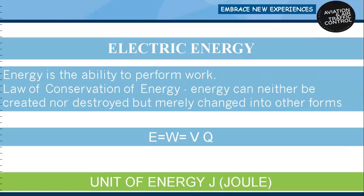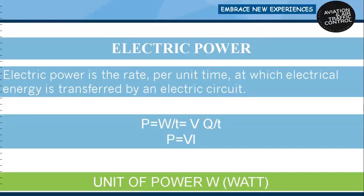Energy equals work done, which equals V times Q. The unit of energy is the Joule, represented by capital J. Electrical power is the rate per unit time at which electrical energy is transferred by an electric circuit. So power equals work done per unit time, and work done equals V times Q divided by time.